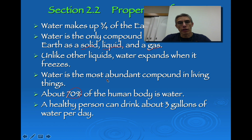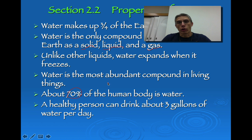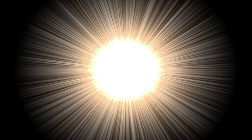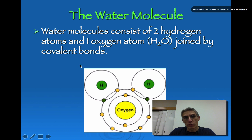That does include the human body, and a healthy person can drink about three gallons of water per day. Since we are talking about organic chemistry, we need to look at the chemical makeup of water. The water molecule consists of two hydrogen atoms and one oxygen atom, joined by covalent bonds.